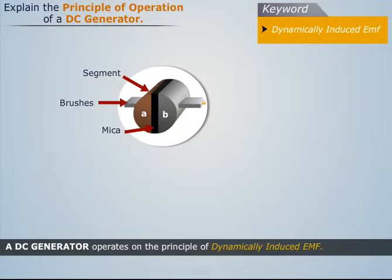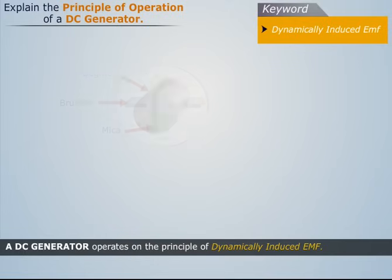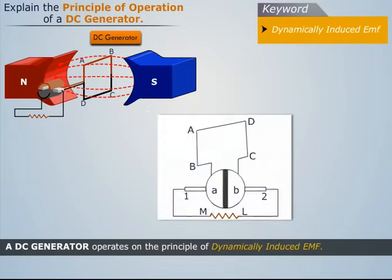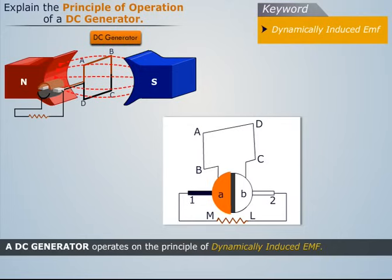Now let's discuss how these split rings change the bi-directional alternating current into unidirectional DC current. Let's assume that current is flowing along ABCD. We see that brush one is in contact with segment A, which acts as the positive end of supply, and brush two is in contact with segment B, which acts as the negative end of supply. Therefore, the direction of current in the load resistance is from M to L.